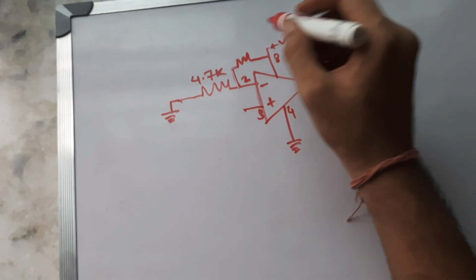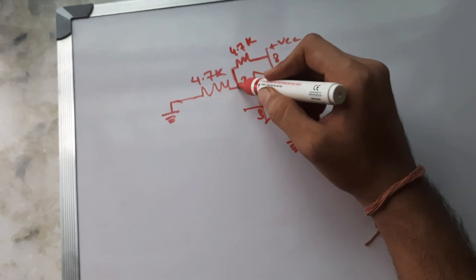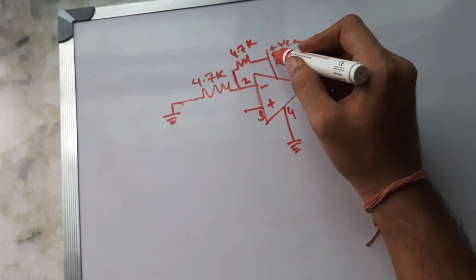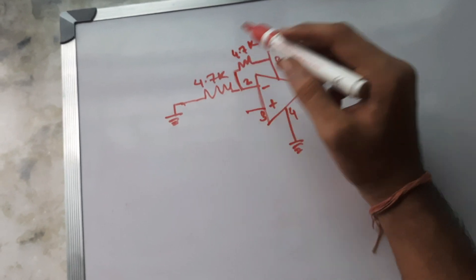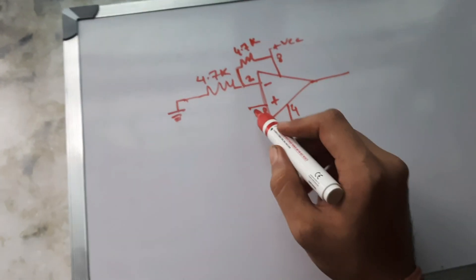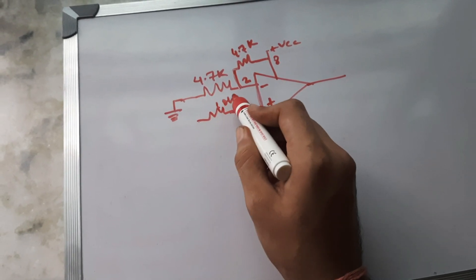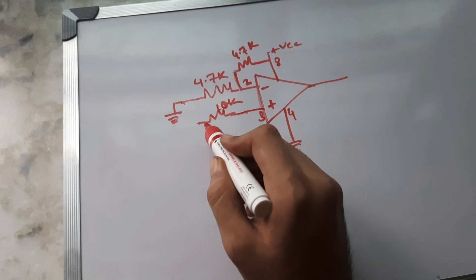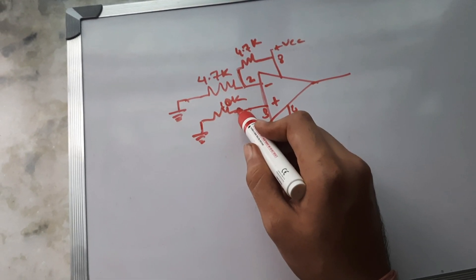So whatever supply will be given, whatever positive supply will be given, will be equally divided between these two resistors because they share the same value. And at this terminal we'll be having a 10k resistor, a 10k resistor which will be grounded.